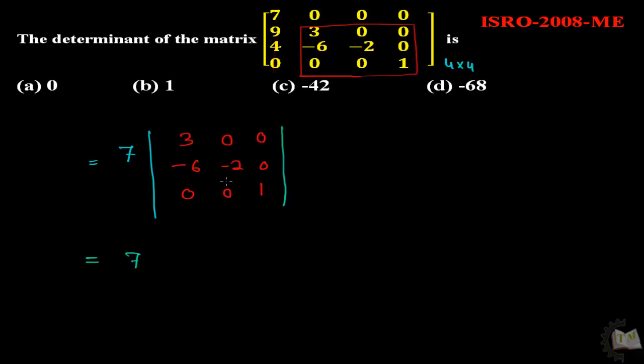7, and in this case also, out of 3 elements, 1 is non-zero and 2 are zero. So we calculate the determinant of this.